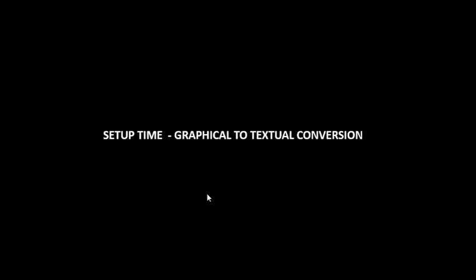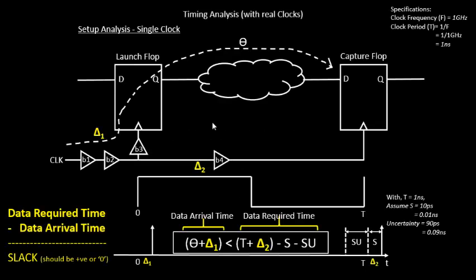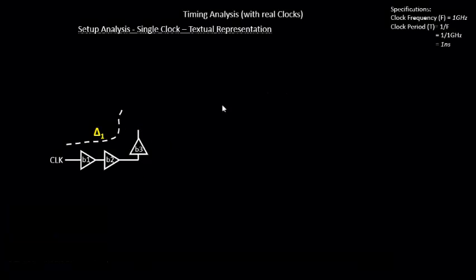We'll start with setup time. The first thing we'll do is convert the graphical representation of setup timing analysis into a textual one. We had this diagram with a launch flop, a capture flop, combinational delay, clock buffers, and so on. We need to convert this into a textual representation so that things are clearer when we add numbers. If we try to write out a report from this diagram, it will look something like the following.